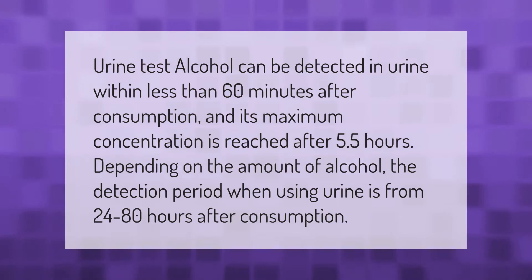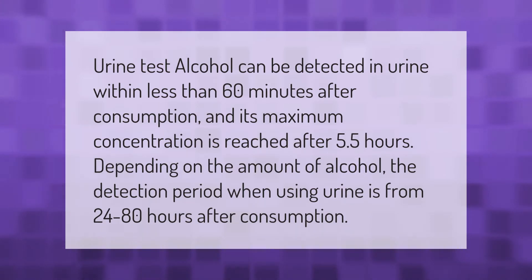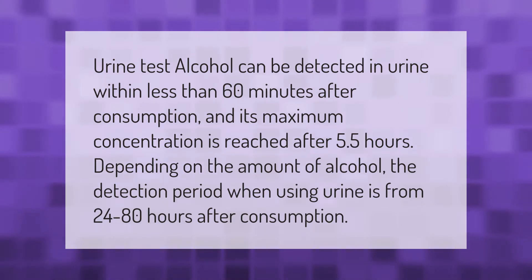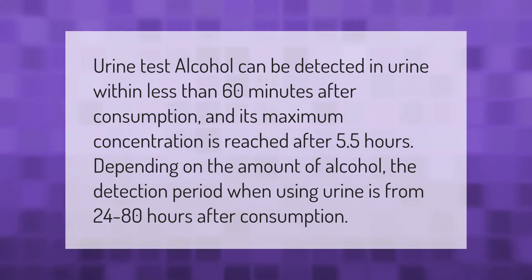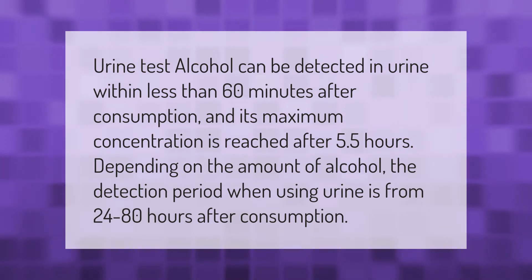Urine test: alcohol can be detected in urine within less than 60 minutes after consumption, and its maximum concentration is reached after 5.5 hours. Depending on the amount of alcohol, the detection period when using urine is from 24 to 80 hours after consumption.